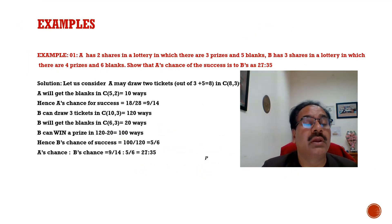Now let us look at one example. A has two shares in a lottery in which there are three prizes and five blanks. B has three shares in a lottery in which there are four prizes and six blanks. Show that A's chance of success to B's chance of success is 27 to 35. This problem is based on simple mathematics. Let us consider A may draw two tickets out of the total given. Total given are three plus five is eight, so how many ways? 8C2. You know the combination. After calculation, you will get 28 ways.